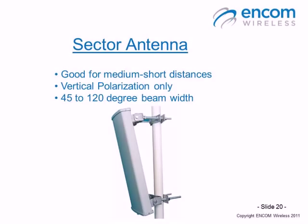The third antenna is the sector antenna, which is useful for medium to short distances but covering a wider range. For example, if you wanted to cover two or three blocks and have multiple radios communicating back to one master, a sector antenna would be useful. A sector antenna can only be vertically polarized, and its beam width ranges from 45 to 120 degrees, which allows for wide coverage but not long distances.